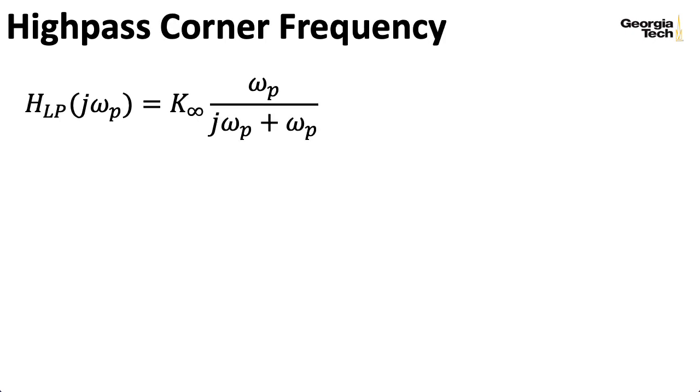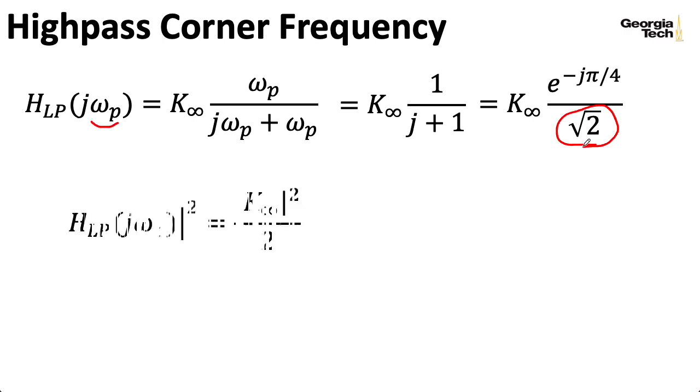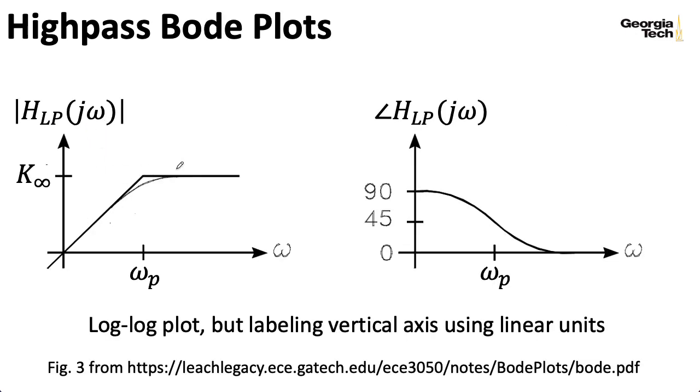Once again, if you ask the question, what is the frequency response at ω_p? Well, you wind up with this quantity here. So you have that -45 degree phase shift, and you have this division by the square root of 2. So once again, we would refer to ω_p as the half power point. And we could draw this kind of figure for a Bode plot for our high-pass filter.